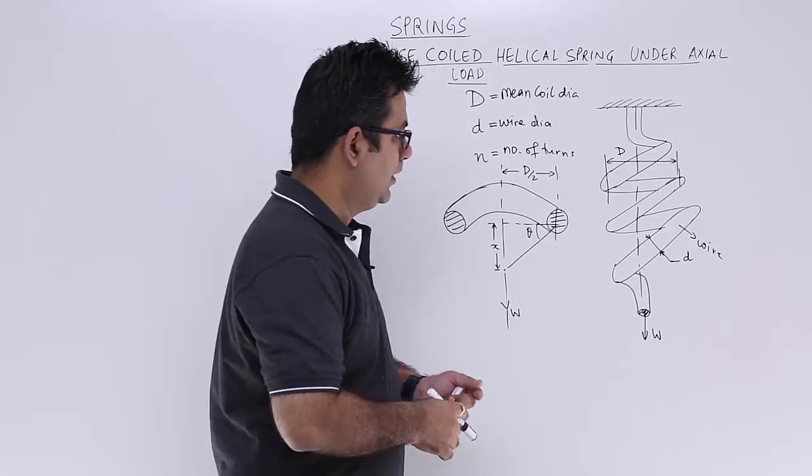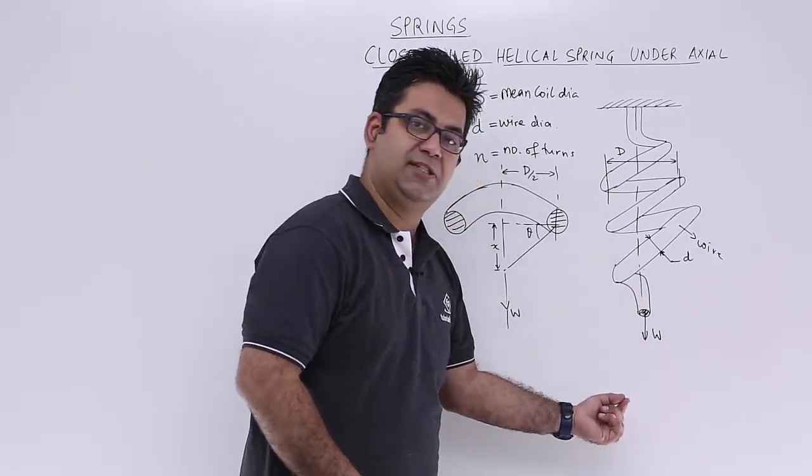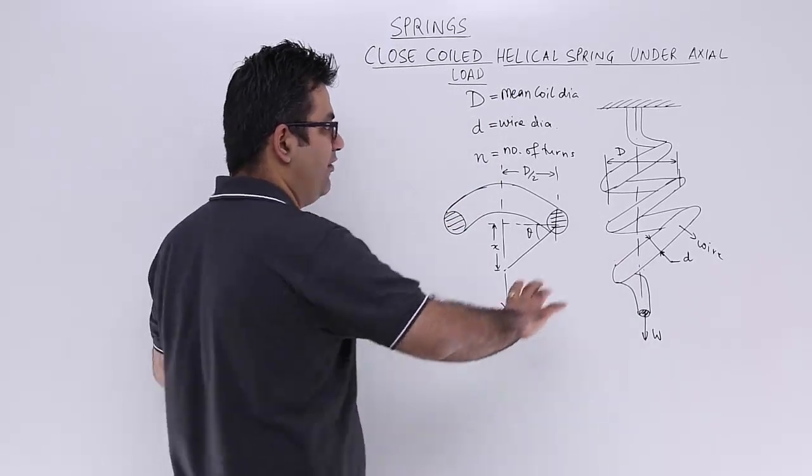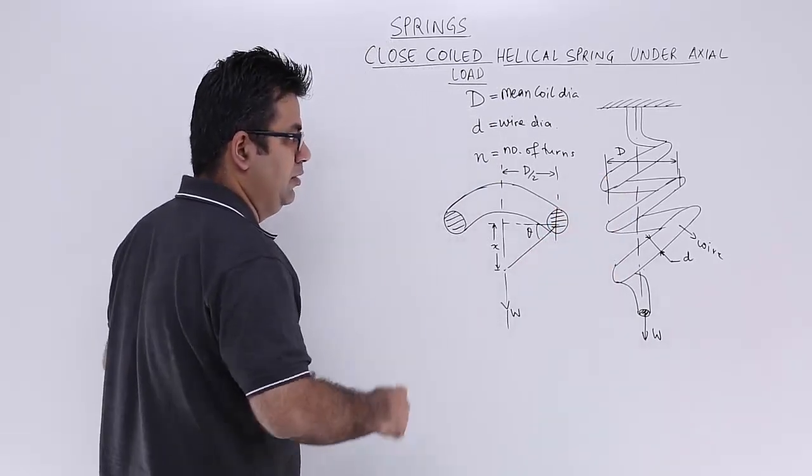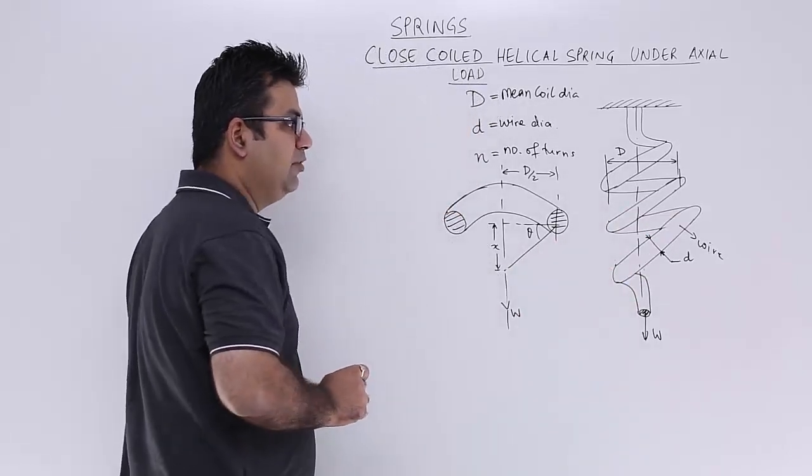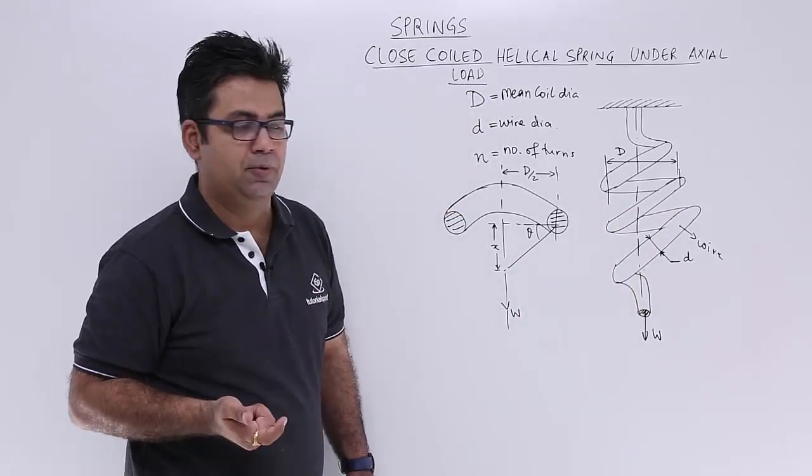Now if you look at this, when you pull this closed coil spring like this, what happens is they are very closely packed these coils are. So this wire will actually twist like a shaft.